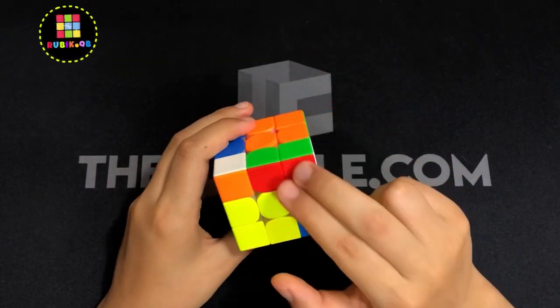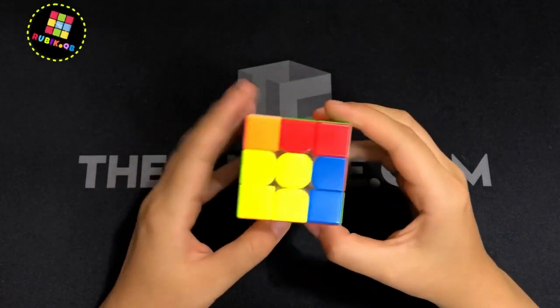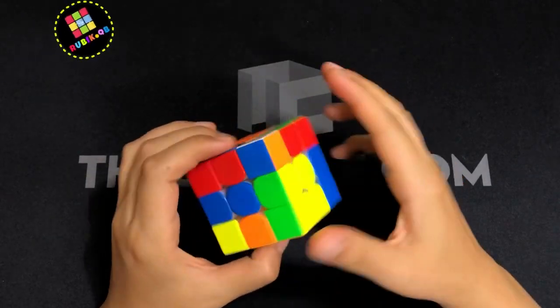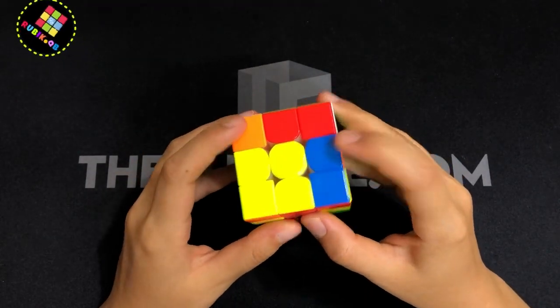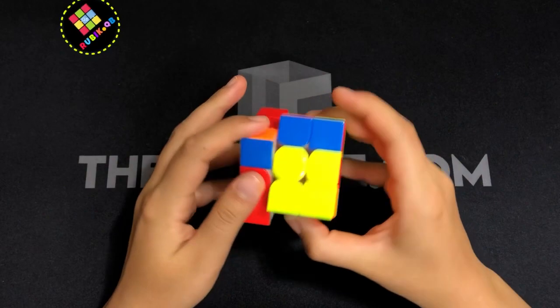So here we have two solved pairs. But before solving these two, he went for this pair. That's real easy, only three moves.